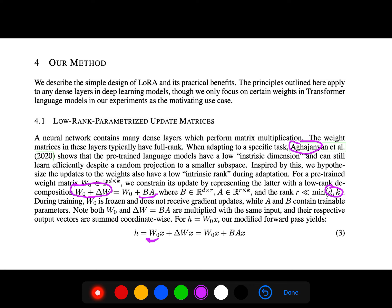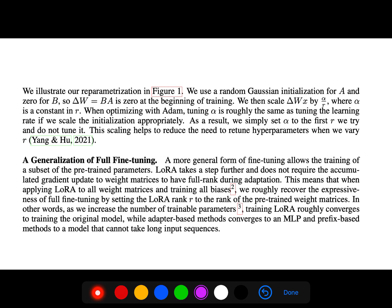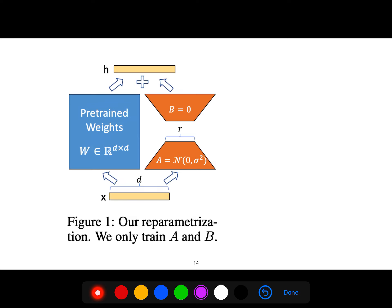So W₀ is frozen and does not receive gradient updates, while this A and B contain trainable parameters. So that's it. That is the reparameterization. So we only train A and B, which are the weights.